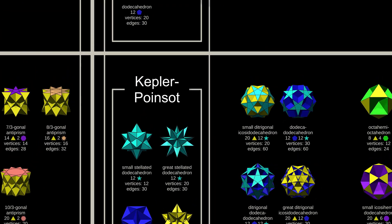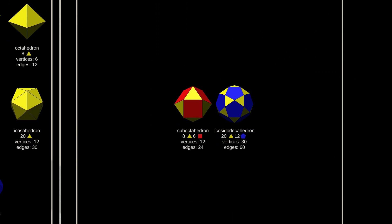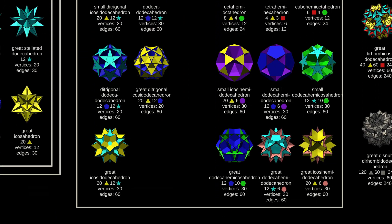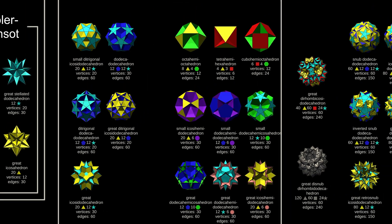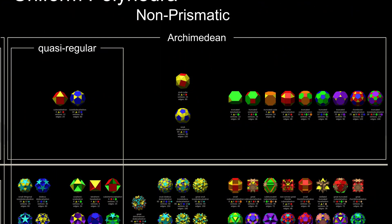The quasi-regular polyhedra have identical edges as well as identical vertices. The 13 convex non-regular solids as a whole are known as the Archimedean solids.